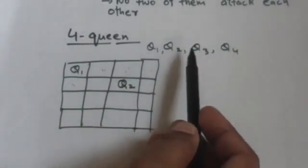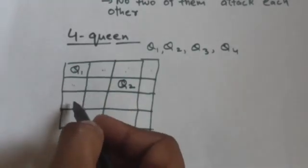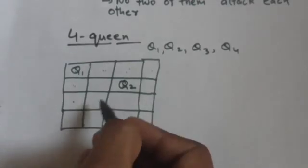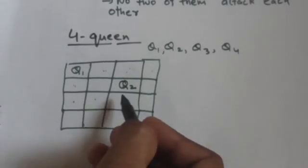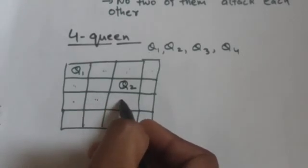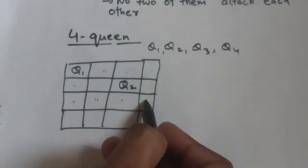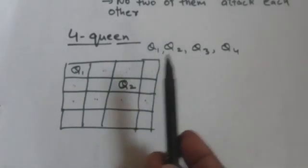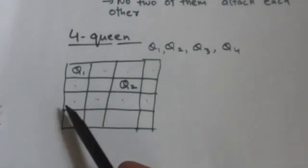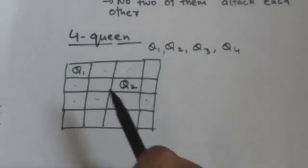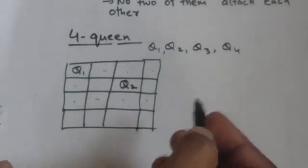Now in the third row we have to place queen Q3. We cannot place it in the first square because it will be attacked by Q1. We cannot place it in the second or third square because it will be attacked by Q2. And placing it in the fourth square also results in an attack by Q2. So for queen Q3 we don't have any valid option in the third row.